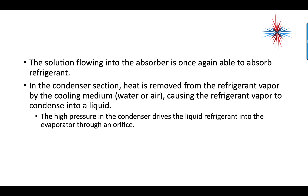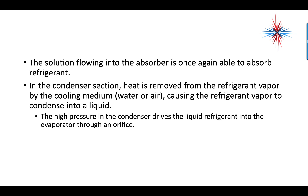The solution flowing into the absorber is once again able to absorb the refrigerant. In the condenser section, heat is removed from the refrigerant vapor by the cooling media — water or air — causing the refrigerant vapor to condense into a liquid. The high pressure in the condenser drives the liquid refrigerant into the evaporator through an orifice. Water flowing through the tubes absorbs heat from the conditioned space and carries it to the evaporator, where that heat is absorbed into the refrigerant.